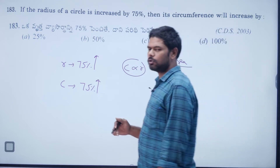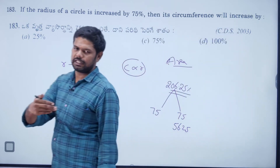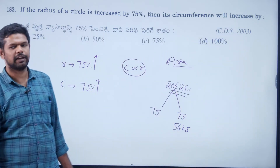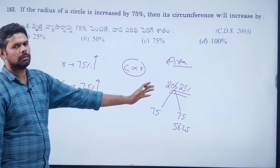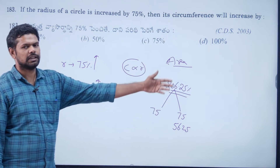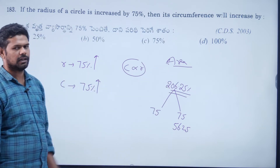For two successive percentage operations use the formula: x + y + xy/100, which is 2x + x²/100 when both values are the same.